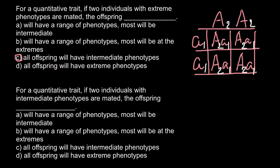The next question: for a quantitative trait, if two individuals with intermediate phenotypes are mated, what do the offspring look like? Answer A: will have a range of phenotypes, most will be intermediate. Answer B: will have a range of phenotypes, most will be at the extremes. Answer C: all the offspring will have intermediate phenotypes. Answer D: all the offspring will have extreme phenotypes.